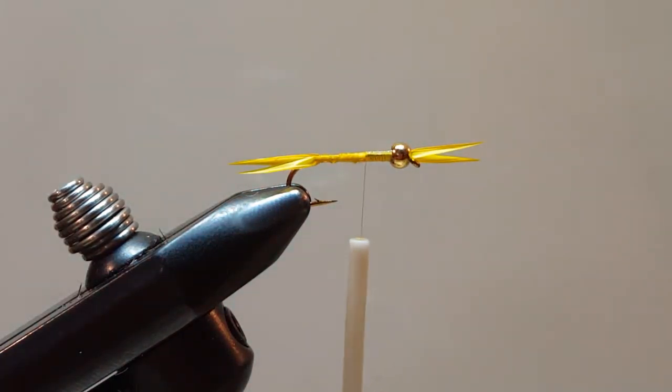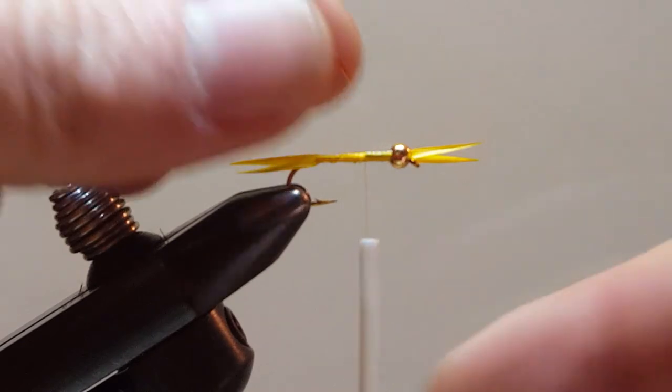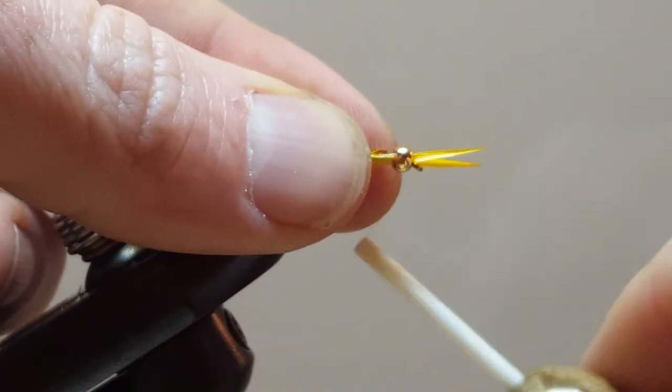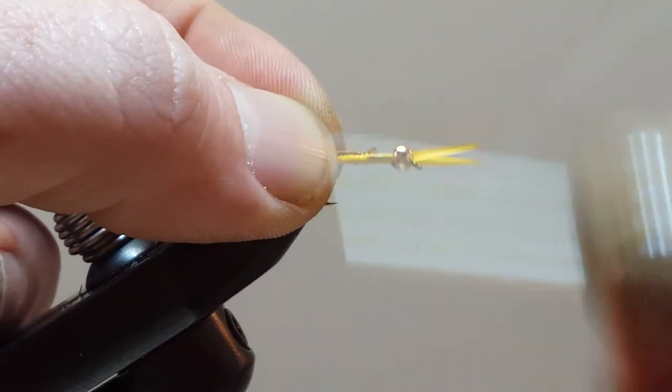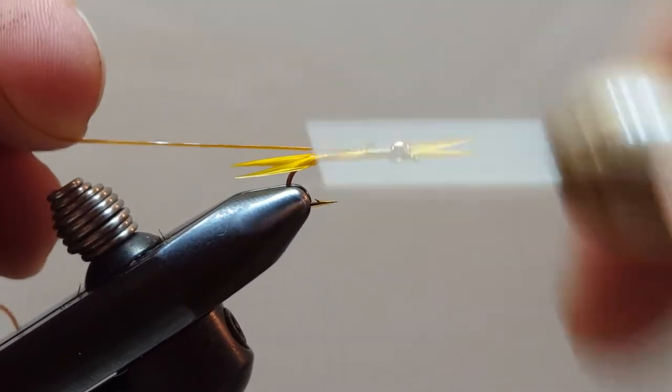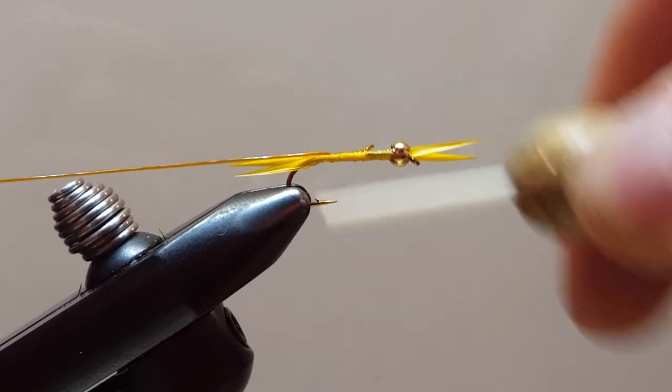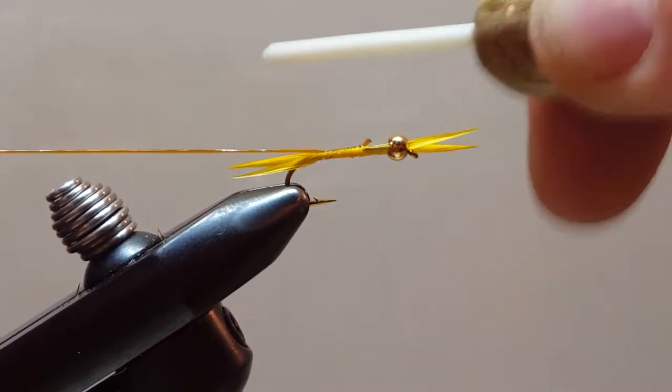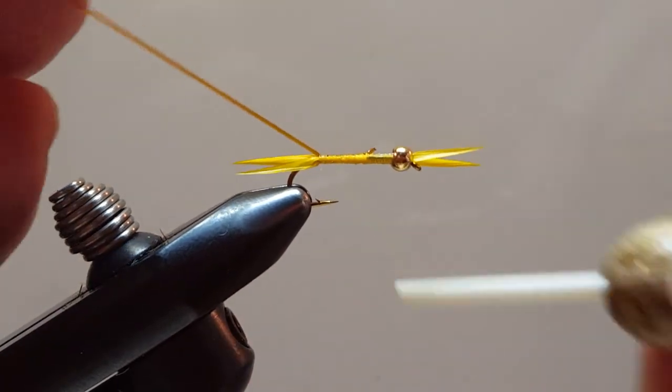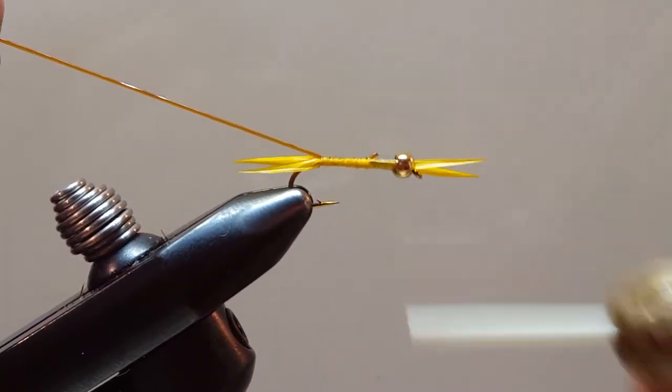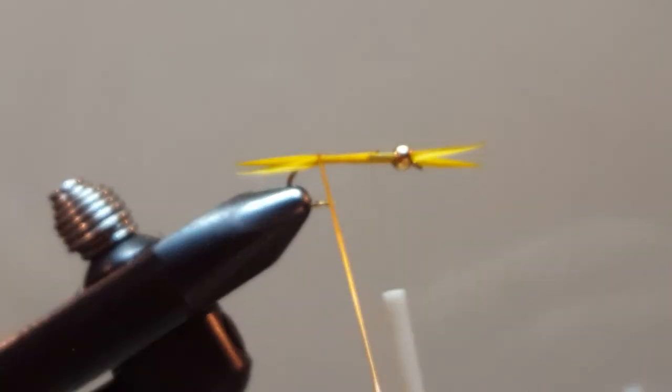So I think just those two little bits help. Okay, now that I'm at that position, I will tie in my ribbing material. This is the vinyl ribbing rubber de-rib. Start this up here. And as I tie this in, I'm going to give this a good stretch. All the way to the bend of the hook. Nice and tight wraps.